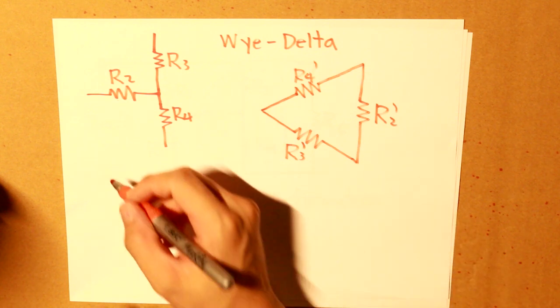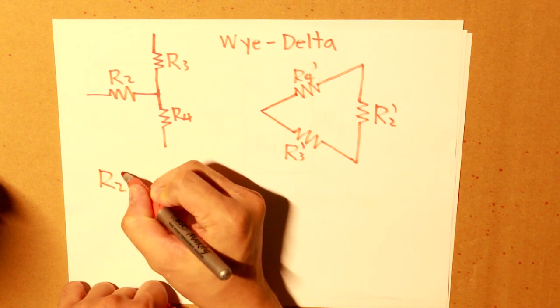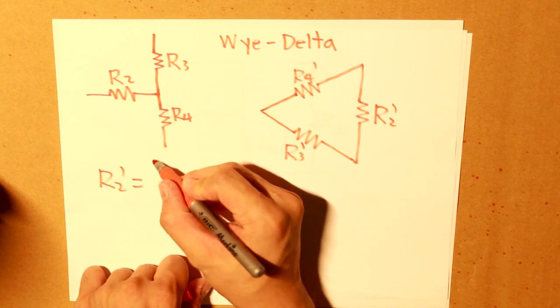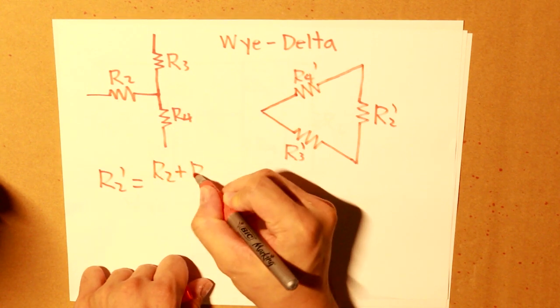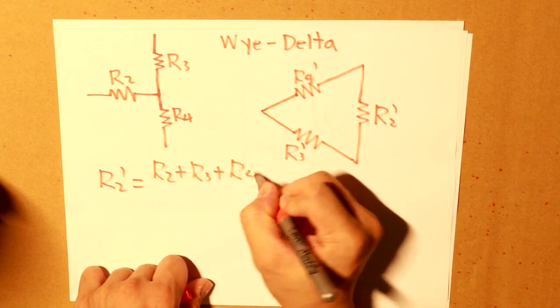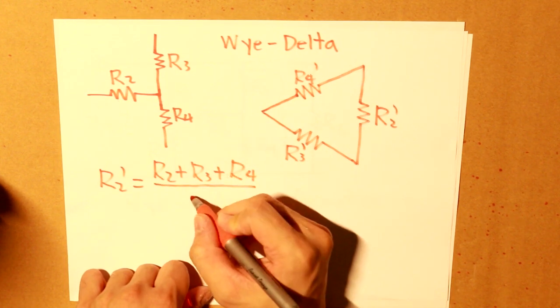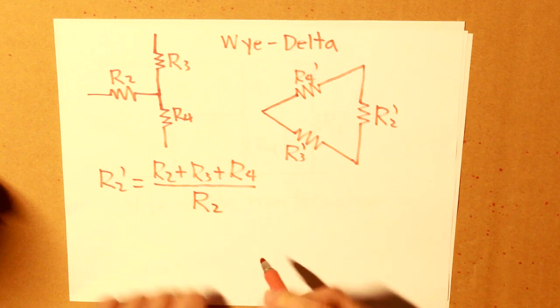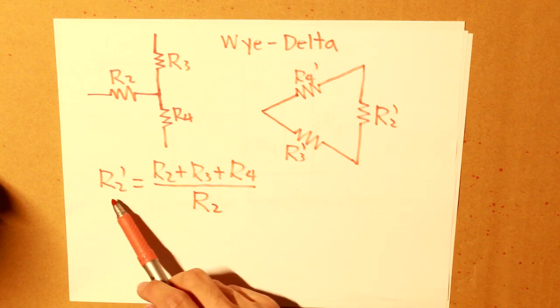Now what I also want to highlight is how do we get these values? Well, this is how. This is what the new value would be. So what we do is we take the sum of all these three resistors.